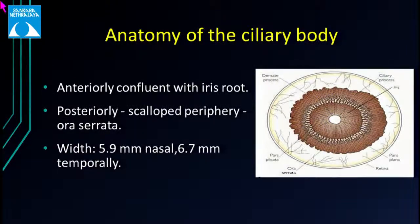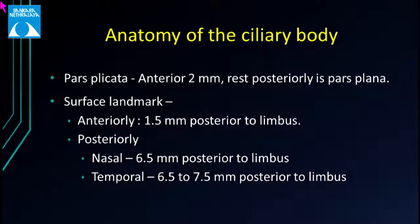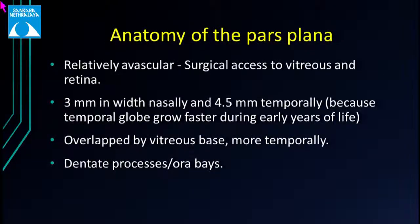The anterior border of the ciliary body is confluent with the iris root, whereas posteriorly it is confluent with the ora serrata. The width of the ciliary body is wider temporally compared to nasally. The pars plicata consists of the anterior 2 millimetres, and the rest is the pars plana. It ranges from 1.5 millimetres posterior to the limbus to approximately 7.5 millimetres posterior to the limbus.